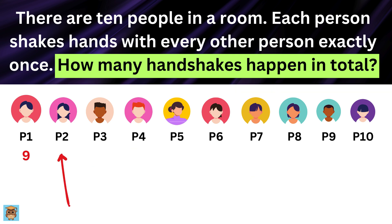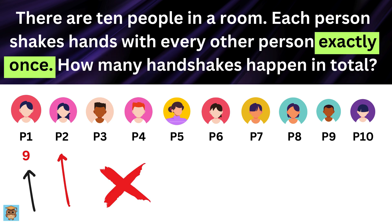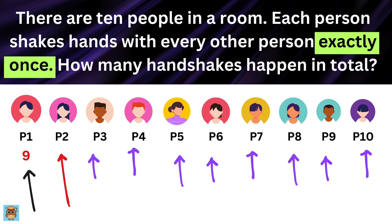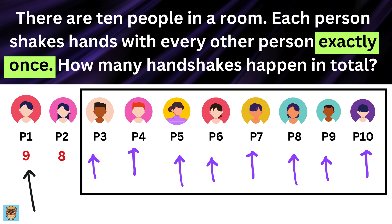Now it's Person 2's turn. But wait — Person 2 has already shaken hands with Person 1. Person 2 will not shake hands with Person 1 again, because each handshake only happens once. So Person 2 shakes hands with the remaining eight people: Person 3, Person 4, and so on, up to Person 10. That's eight handshakes for Person 2.